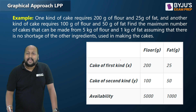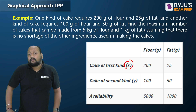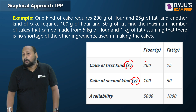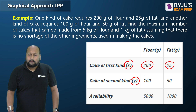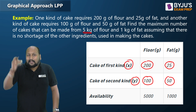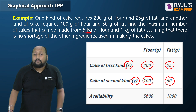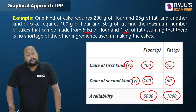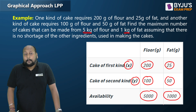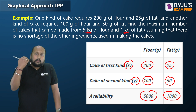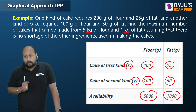Let me frame the tabular format. Let x be the number of cakes of the first kind and y be the number of cakes of the second kind. For the first kind we use 200 grams of flour and 25 grams of fat; for the second kind, 100 grams of flour and 50 grams of fat. Total availability: 5 kg (5000 grams) of flour and 1 kg (1000 grams) of fat.